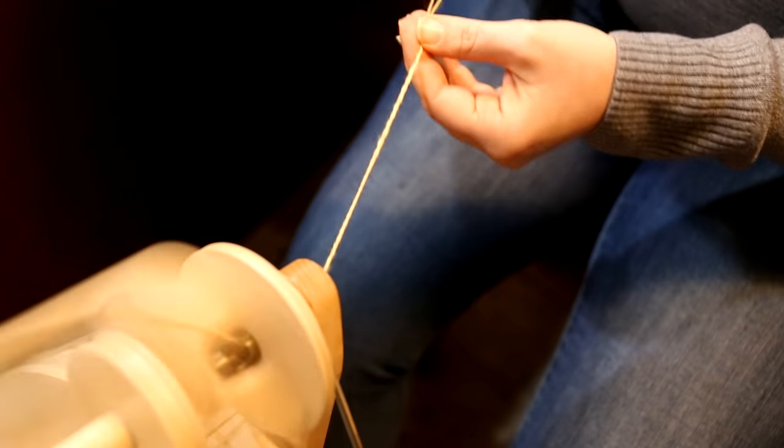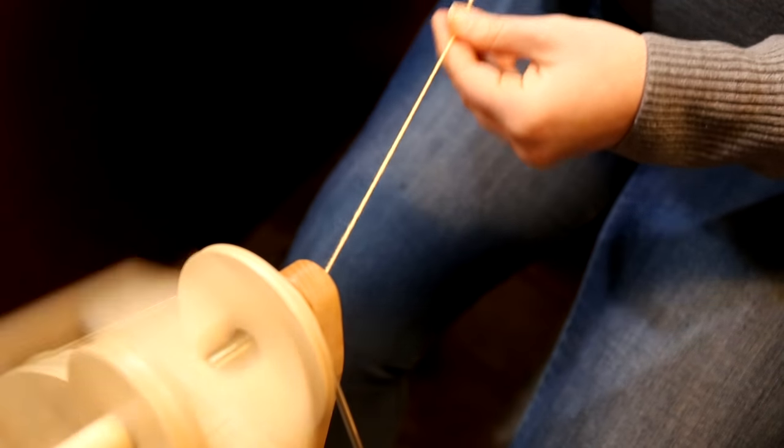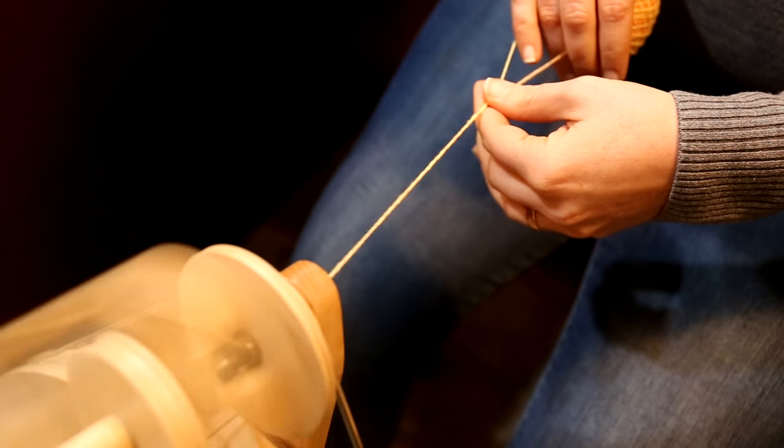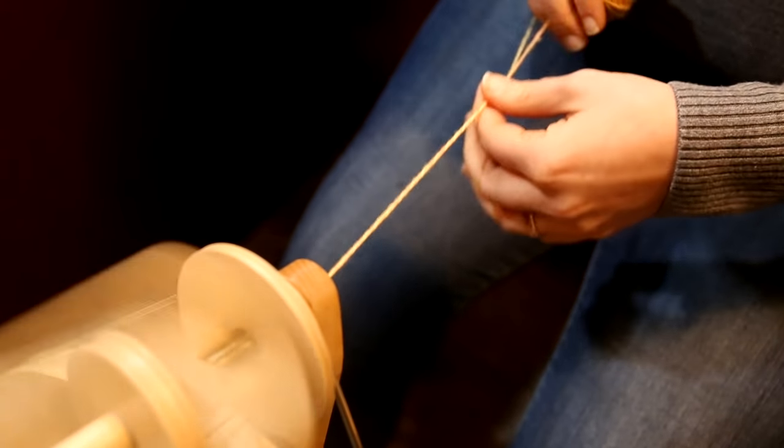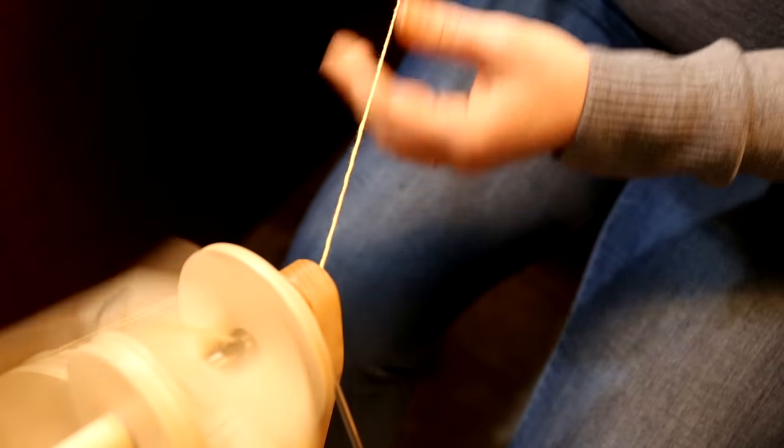You could maybe spin just the cuff of a sweater or maybe just the collar of a sweater or maybe just the heels and toes of socks and you'll find that your yarns will wear really well. These are very strong yarns and they're very round. The nice thing about cabled yarns as well is they tend to add strength to finer fibers.